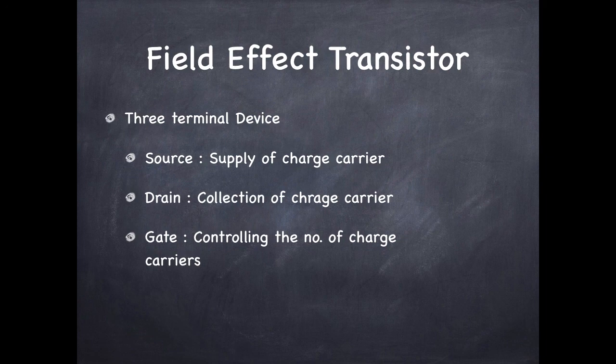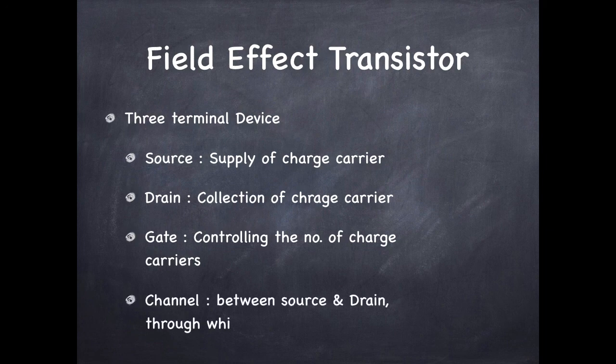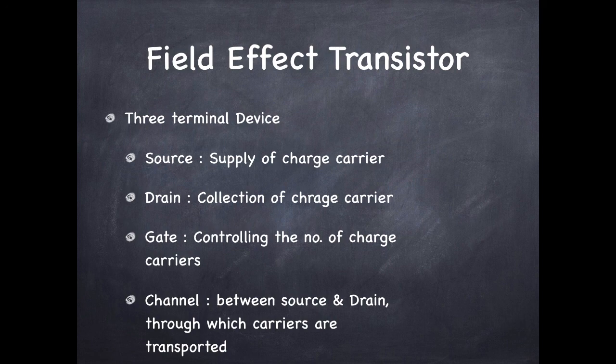The function of the source terminal is to supply the charge carriers. Drain collects the charge carriers and gate basically controls the number of charge carriers which pass through channel. That is channel is between source and drain through which the charge carriers are transported.